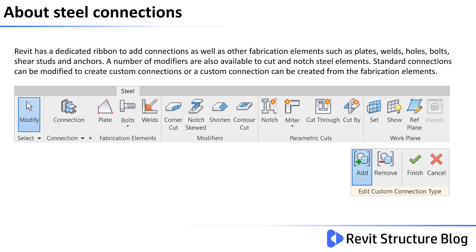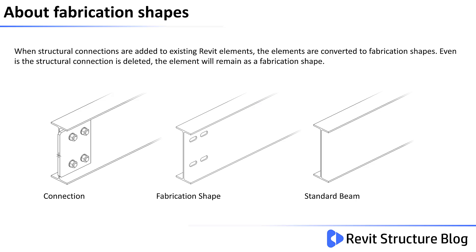Standard connections can be modified to create custom connections, or a custom connection can be created from the fabrication elements. When structural connections are added to the existing Revit elements, the elements are converted to fabrication shapes. Even if the structural connection is deleted, the elements will remain as fabrication shapes. Due to the elements changing to fabrication shapes, careful consideration should be made prior to adding connections.